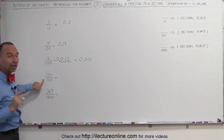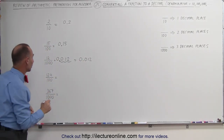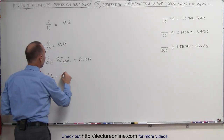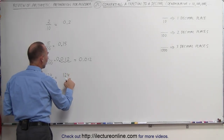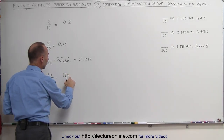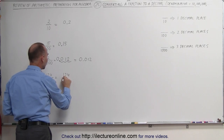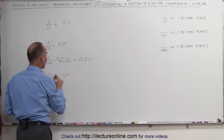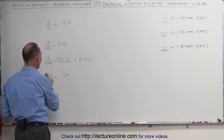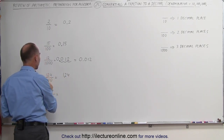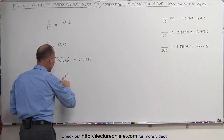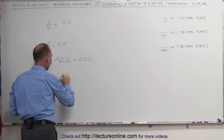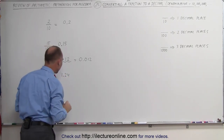In this case, we need two decimal places. We write the number 124, starting from the right: one, two — put the decimal place right there. In other words, 124 divided by 100 is the same as 1.24.